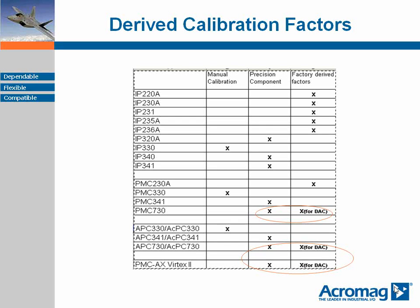In the next installment, we will look at using the calibration factors with Acromag provided software to improve the accuracy of data. Detailed manuals for all of these products may be downloaded from the Acromag website. We encourage you to sign up for our free monthly technical e-newsletter, which will inform you of new products and methods for using current products more effectively. You can find a link to the subscription page on the right side of the Acromag homepage.